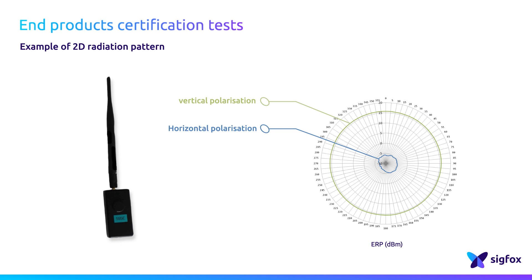The radiated pattern also shows the very low ERP power in horizontal polarization. As the Sigfox network is based on a star topology, it's highly important that the device radiates in an omnidirectional way.